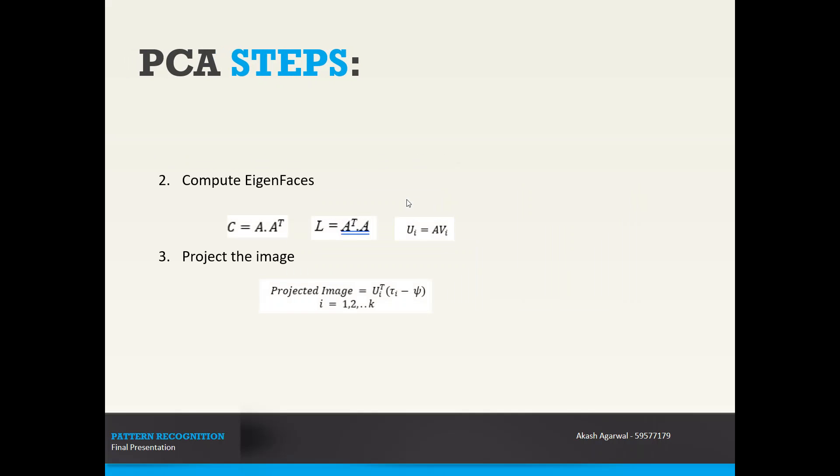In the second step, we compute the eigenfaces. Eigenfaces are computed by the given formula here. However, our input image is size 50 by 50, so the covariance matrix will come out to be huge at 2500 by 2500. So instead of that, we calculate A transpose into A, and then U and V represent the eigenvector for C and L respectively.